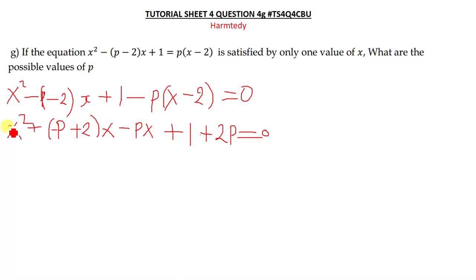So our value of a is this side. Then our b is just the combination of this. So if you want, we can even say, we can simplify this by saying x squared, then plus. So we have this negative p, minus p there. We can have negative 2p.